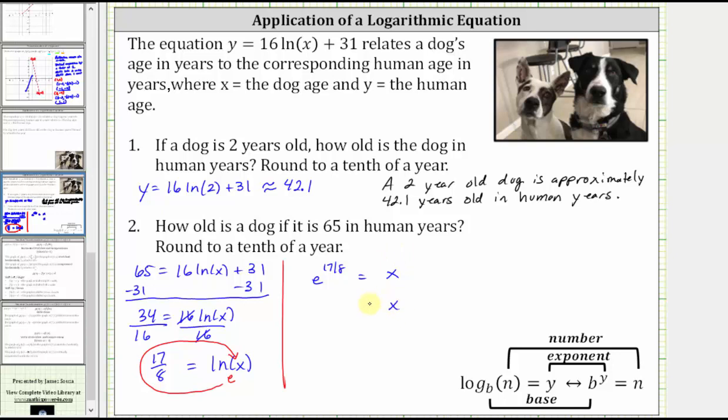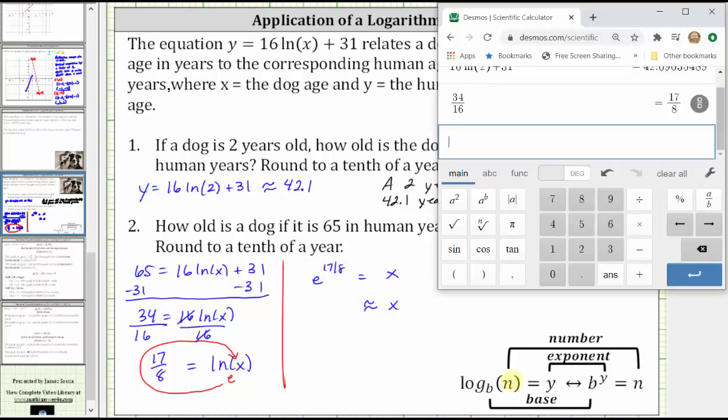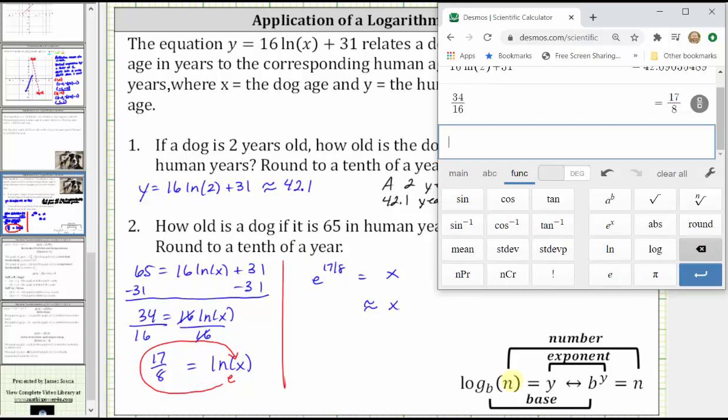And now we go back to the calculator to get a decimal approximation for x, the dog's age. Go back to functions, e is toward the bottom. And then we hit the exponent key, which is a to the power of b.